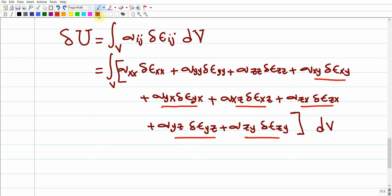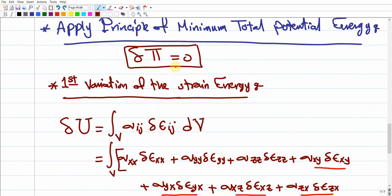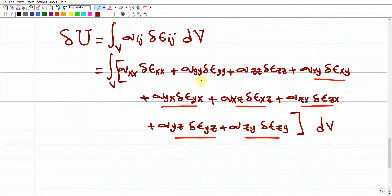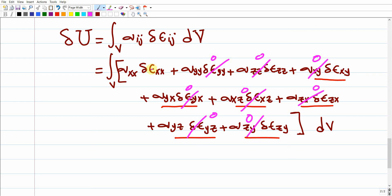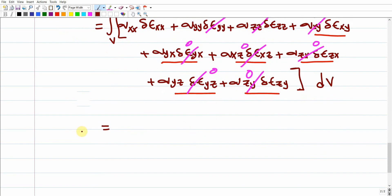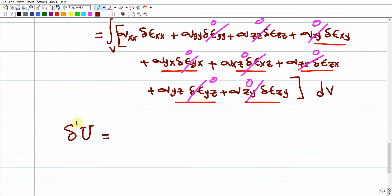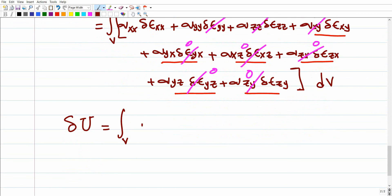For the Euler-Bernoulli beam, all strain components are zero except epsilon_XX. Therefore, the first variation of strain energy simplifies to: delta_U = integral over volume of sigma_XX · delta(epsilon_XX) dV.